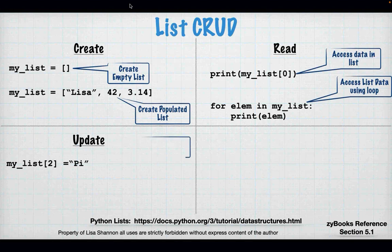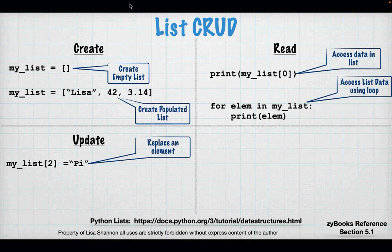Update: you can change the value of any element in the list. Using 'my_list[2]', for example, you access the element at index two — the last element in a three-element list — and assign a new value to it. What that does is simply remove the old value and add a new one.